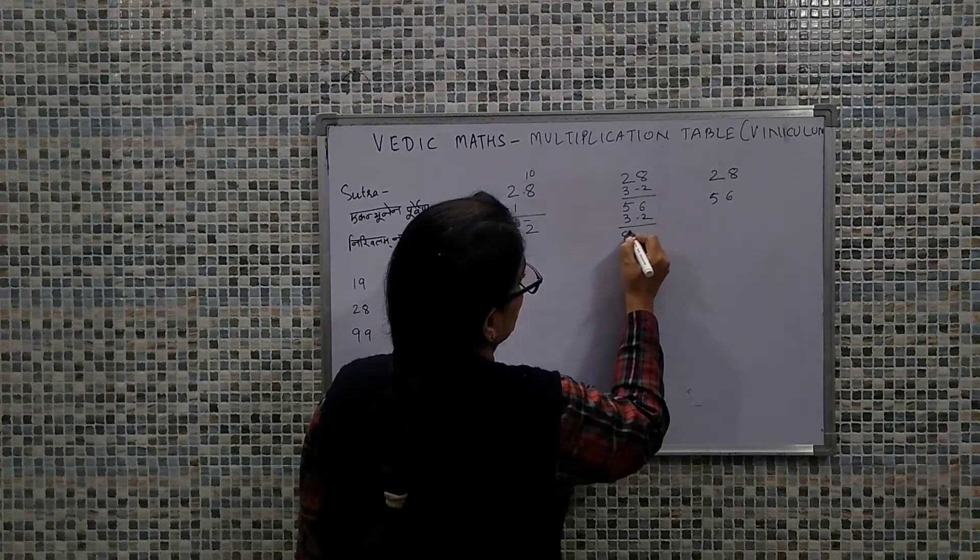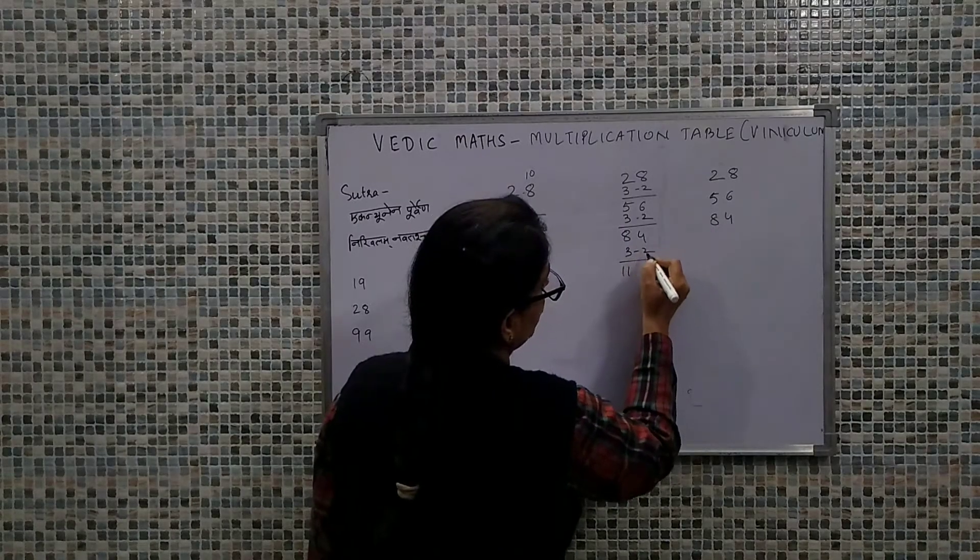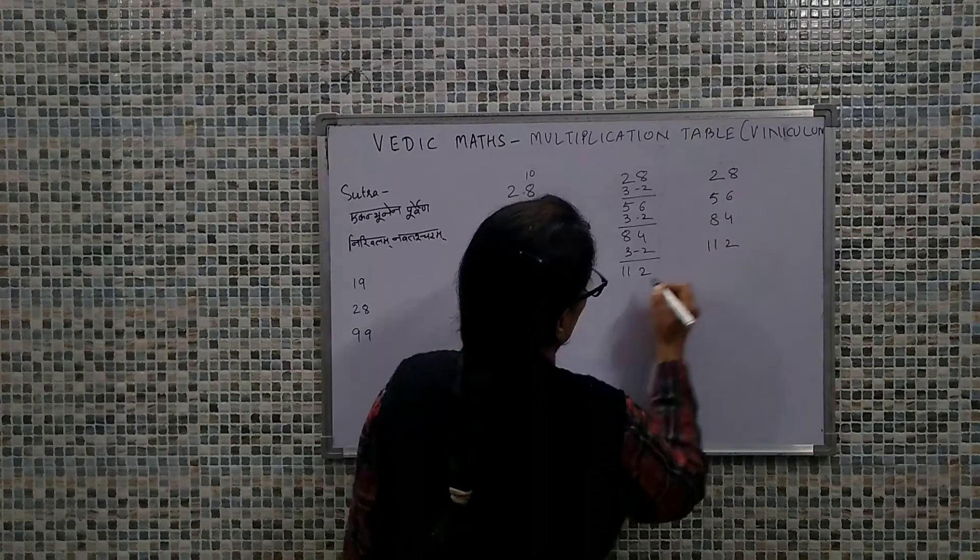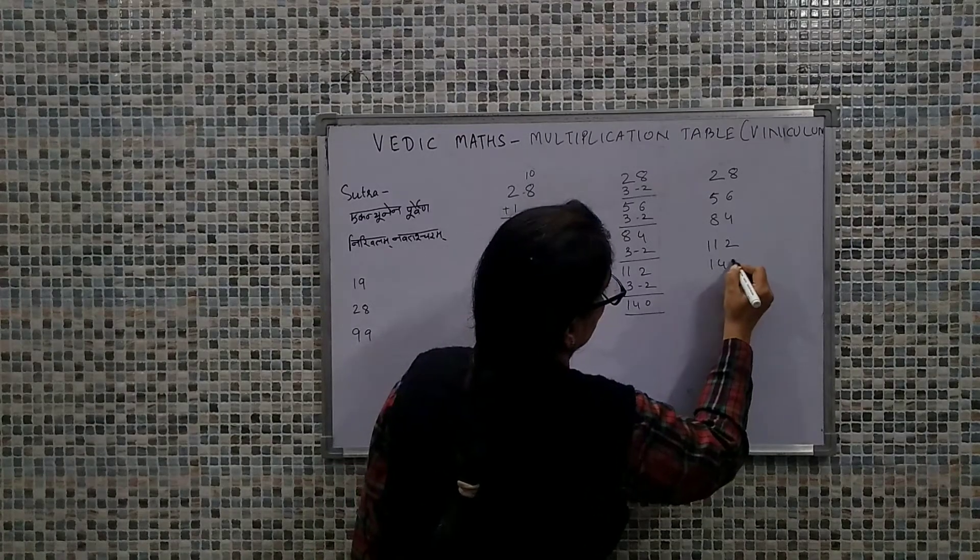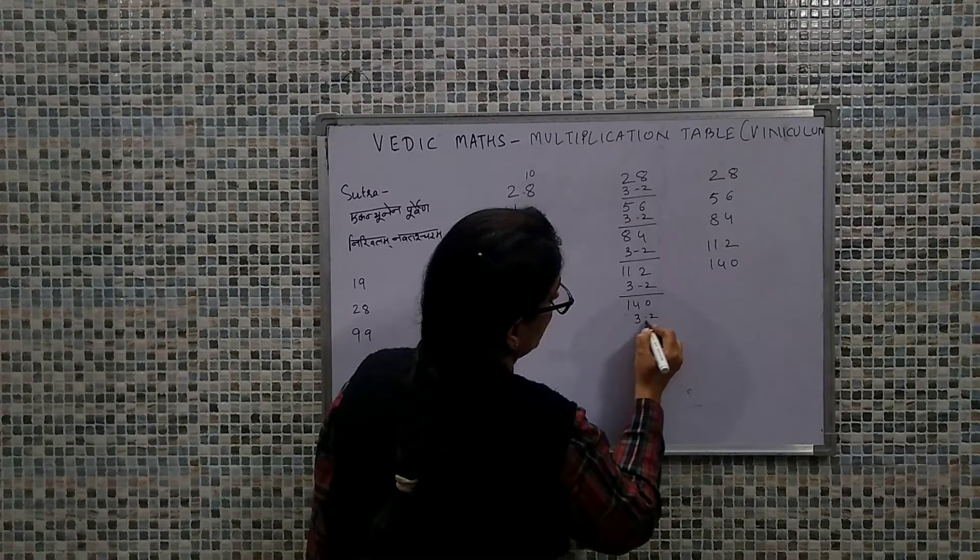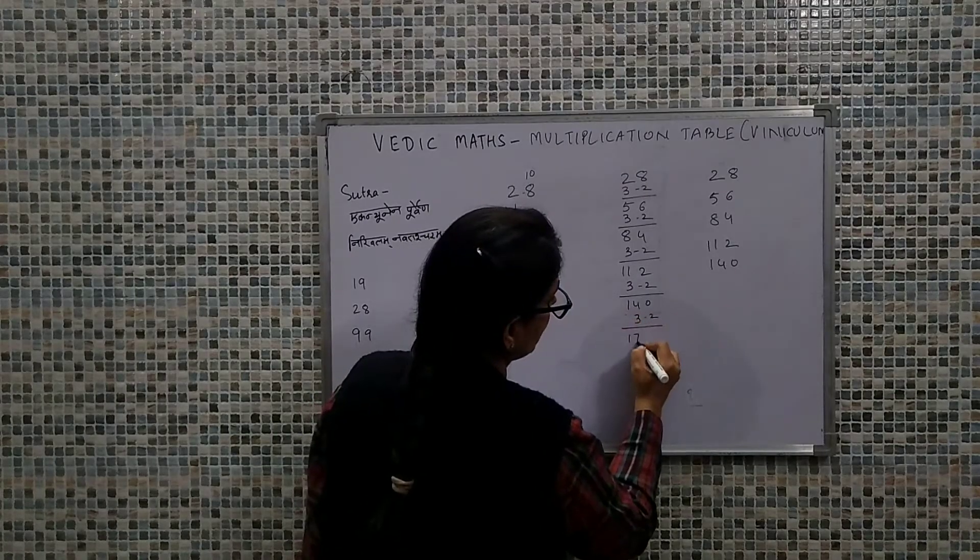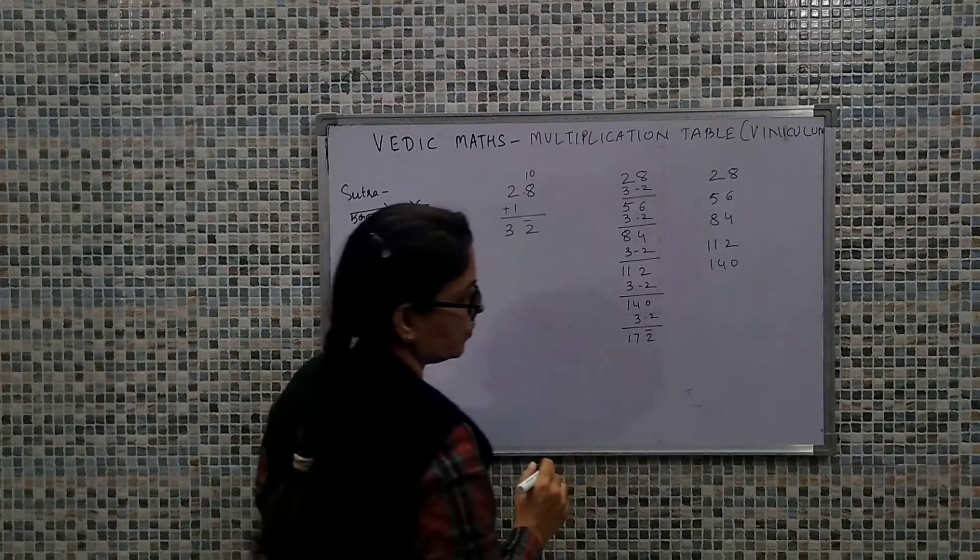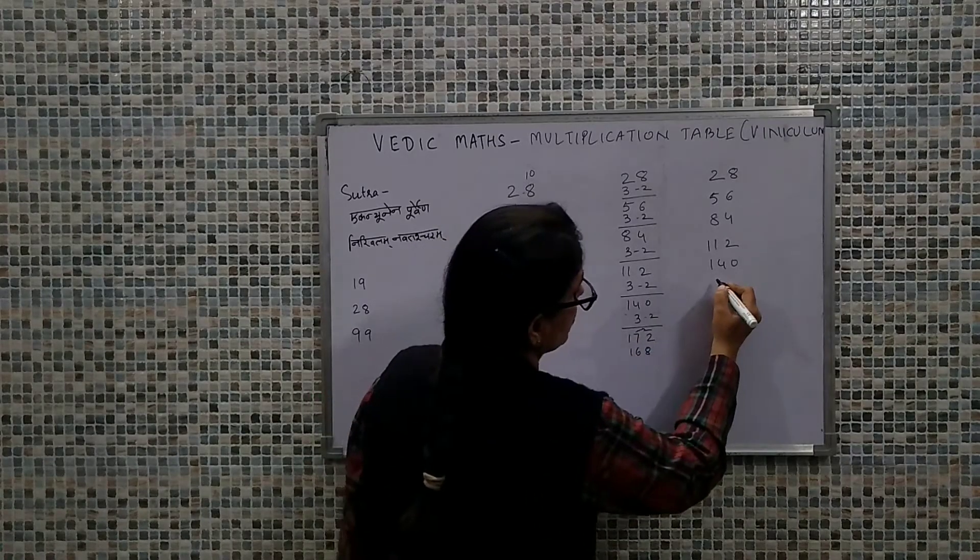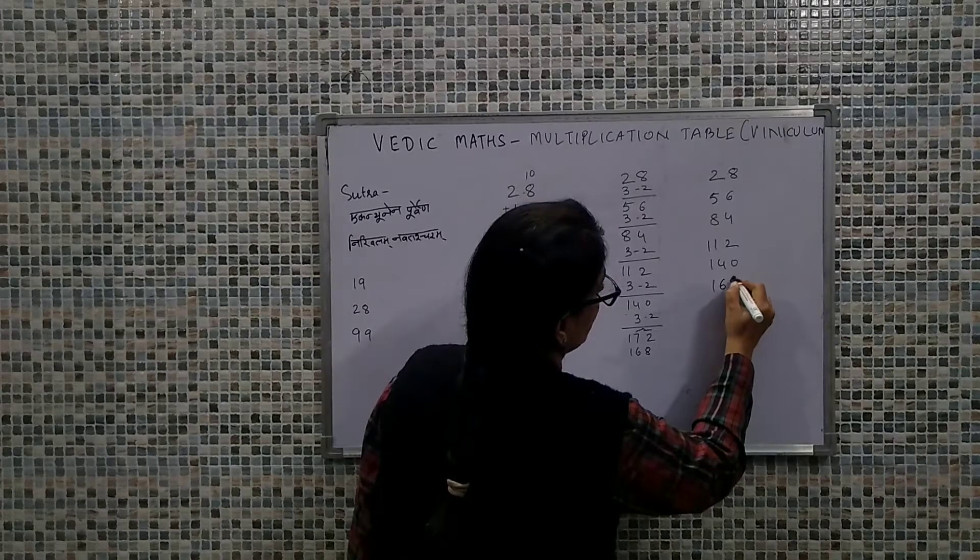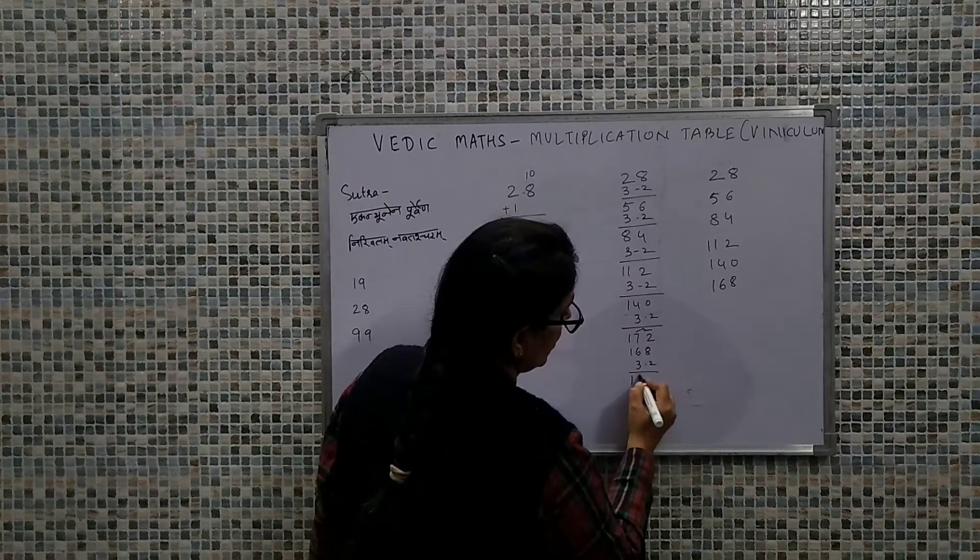So 56 plus 3 minus 2 is 84. Plus 3 minus 2: 8 plus 3 is 11, 4 minus 2 is 2, that's 112. Plus 3 minus 2, that's 140. Plus 3 minus 2. Here we have to put some effort. See, 14 plus 3 will become 17, 0 minus 2 is minus 2. Now because this is negative I'll borrow 1 from here, so this will become 168. So the next value is 168. Next we'll go the same way, plus 3 minus 2, so 196.